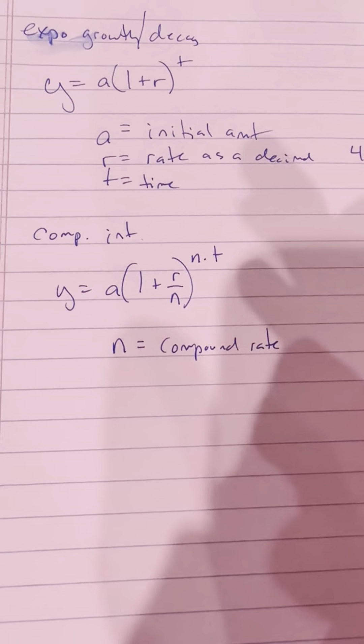Compound interest is kind of like the growth formula, but we have to put the compound rate in there. This is y equals a times 1 plus r over n to the n times t power, where a is still the initial amount, and r is the rate as a decimal. N is the new thing here — the compound rate. If it's annually it's 1, monthly is 12, stuff like that. You'll use the calculator for these problems too.